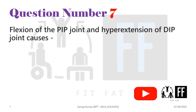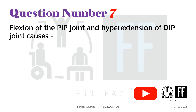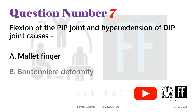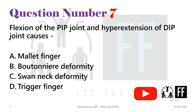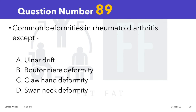Question number 7: Flexion of the PIP joint and hyperextension of the DIP joint causes — and the options are given. Out of these options, options A, B, and C are typical rheumatoid arthritis hand deformity presentations. This is similar to a question that was asked in the Jamia paper, question number 89.